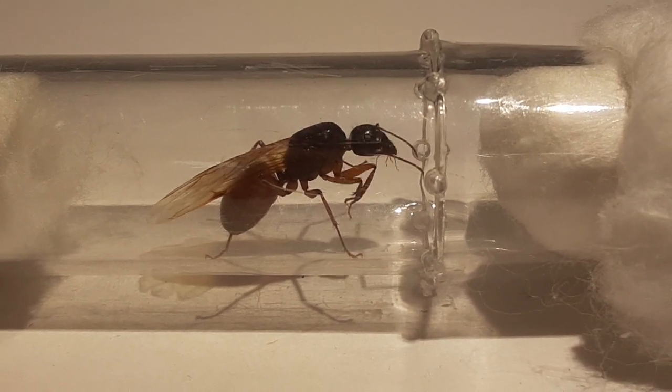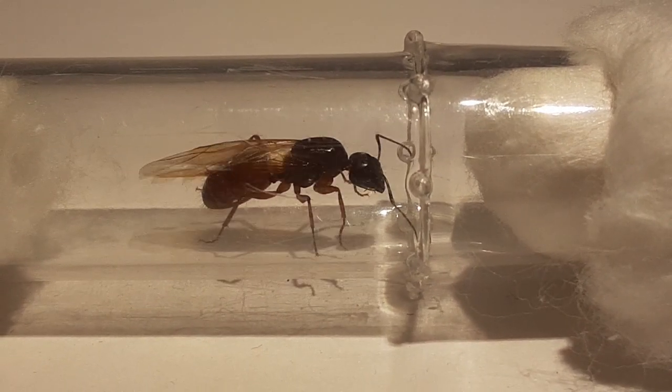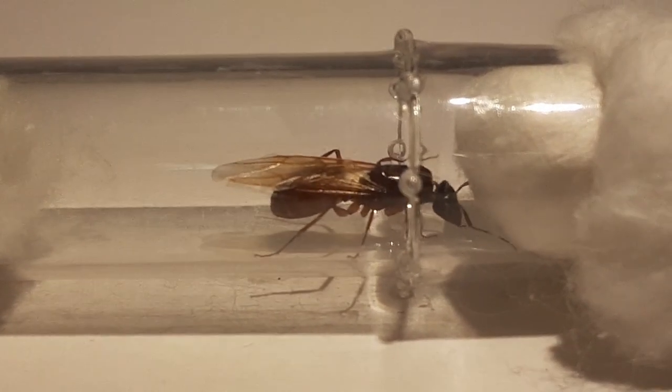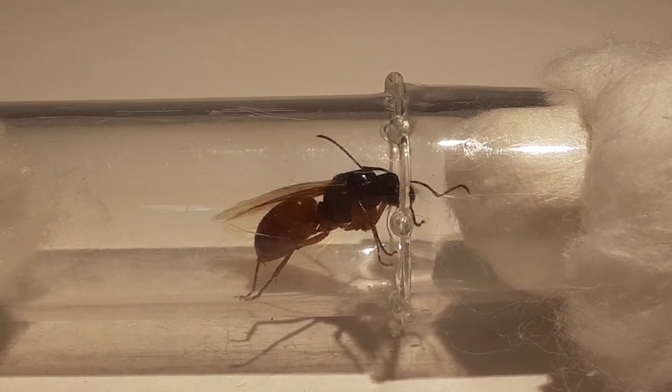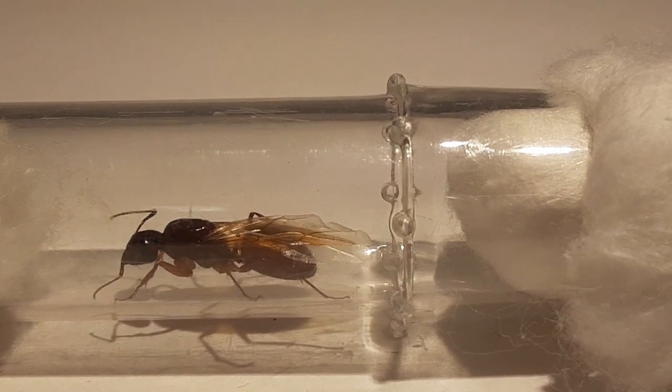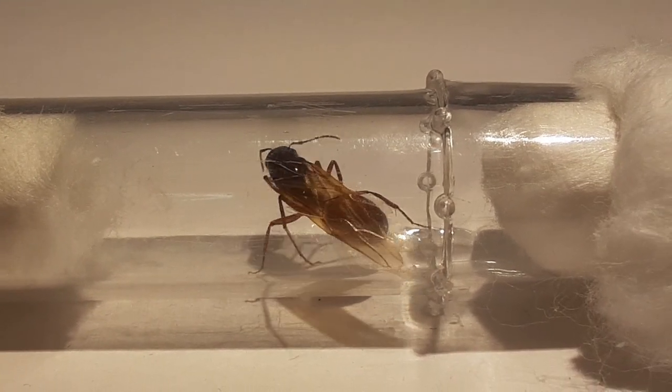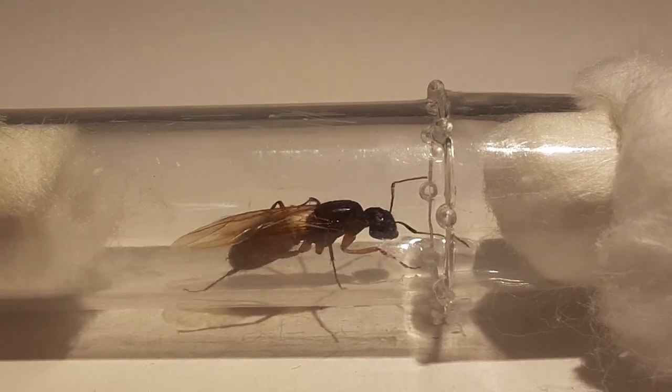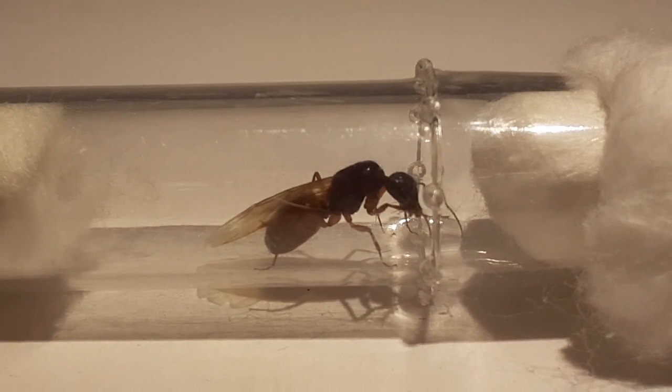She still has her wings, so she may actually be infertile, which would be bad because then we can't actually raise her into a colony. But there's also the chance that she just hasn't shed her wings yet and she will eventually lay eggs. I'll let you guys know when that happens. I think she's a beautiful looking queen. I hope she survives and starts laying eggs—that would be great. This is just a close-up view of her.